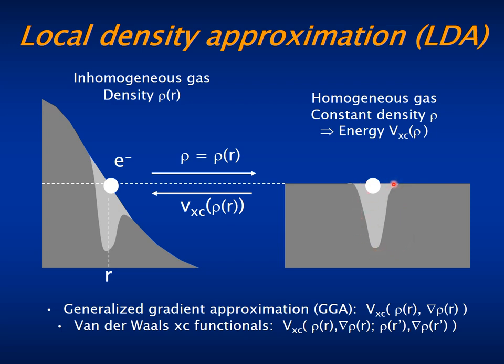This exchange and correlation hole has two parts. The first one is due to the Pauli exclusion principle, which implies that where one electron is, there can be no other electrons, which in reality implies that they cannot be nearby. And this part is called the exchange, and another part which is due to the repulsion, to the electrostatic repulsion between the electrons, which is called correlation properly. In the general gradient approximation, the potential depends not only on the density at that point, but also of the gradient of the density at that point.